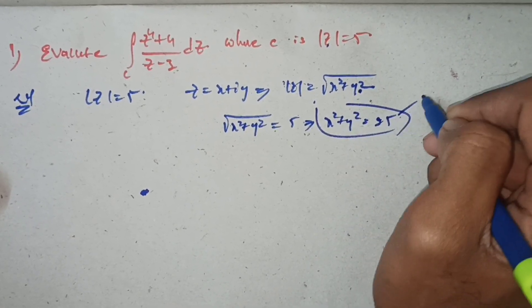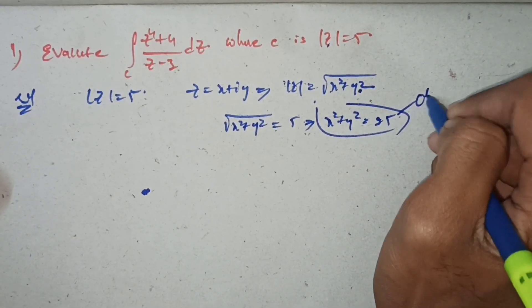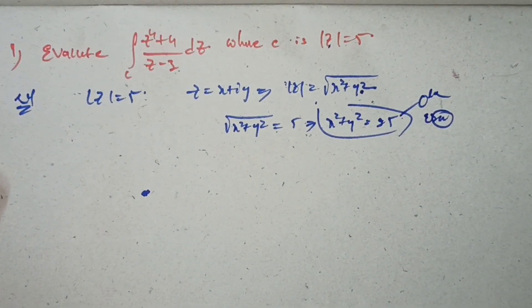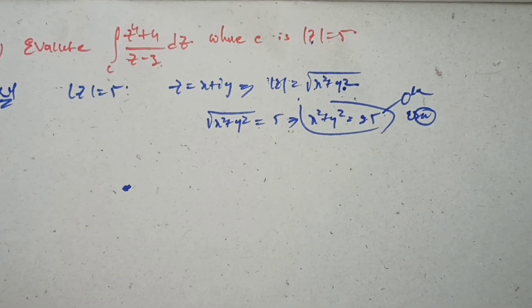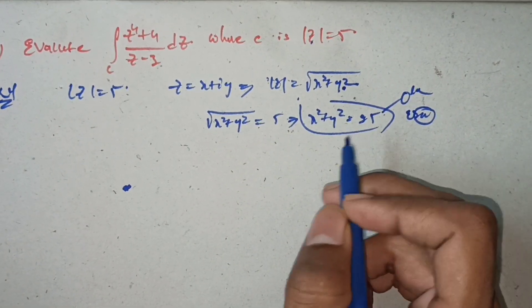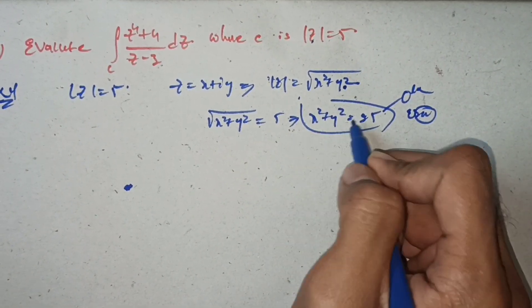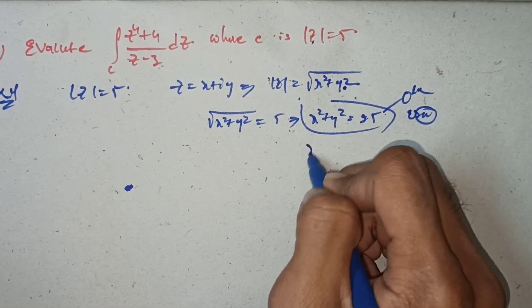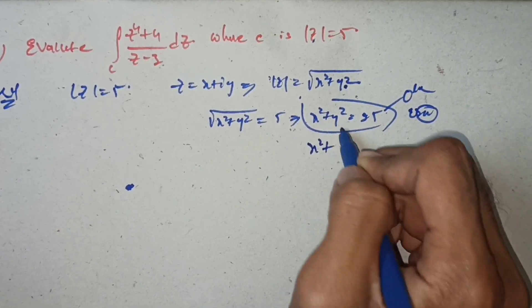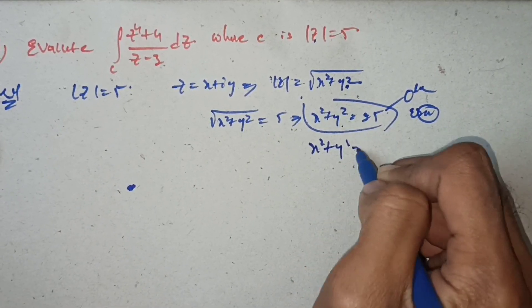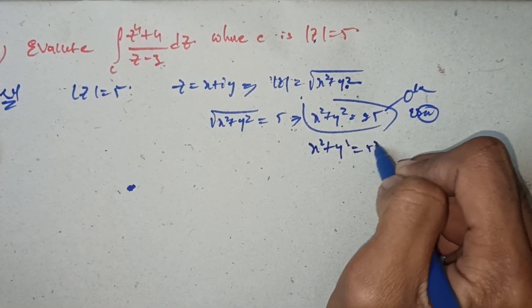Now, |z| = √(x² + y²) = 5. Squaring on both sides, x² + y² = 25. This is the circle equation. It is in the form x² + y² = r².